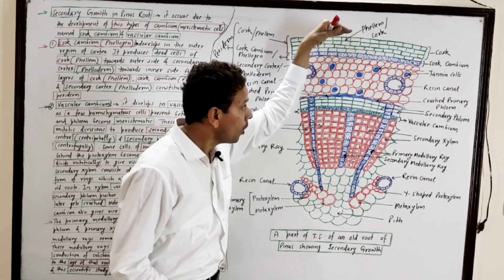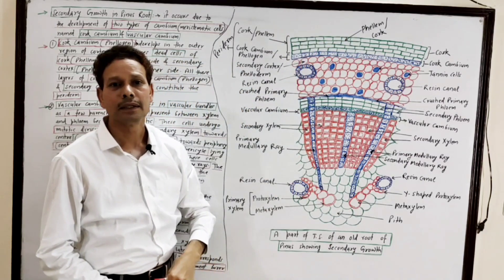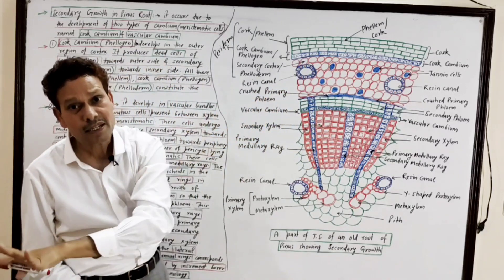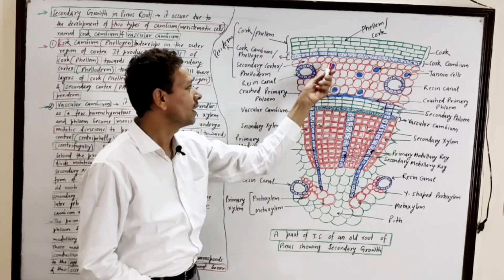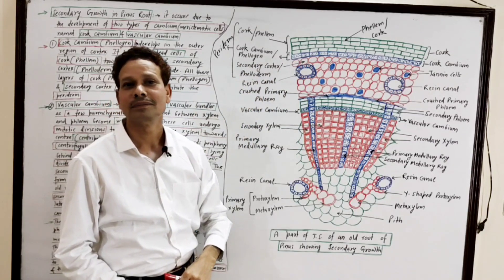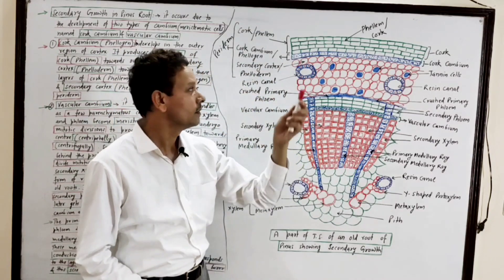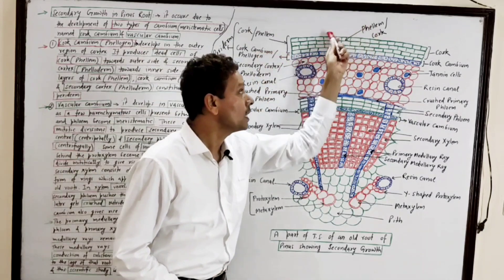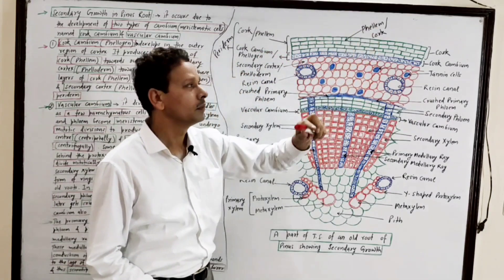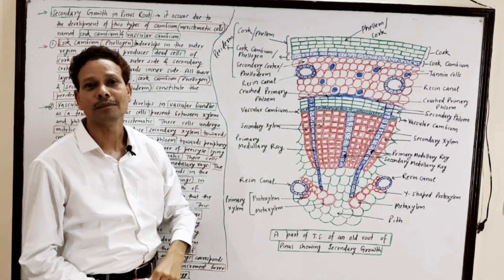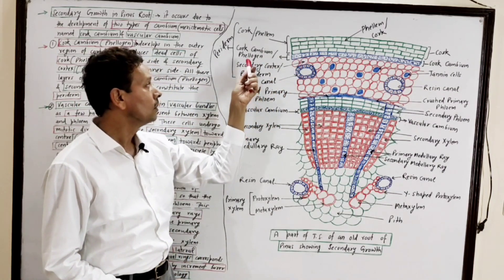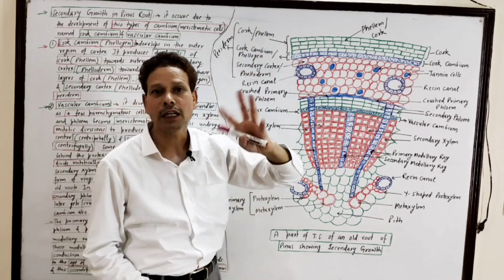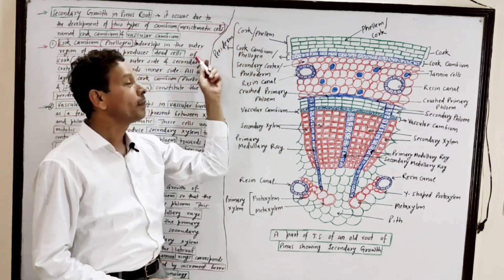The cork cambium also gives rise to cells towards the center, towards the inner side — these are secondary cortex, or phelloderm. Note: the cork cambium is phellogen, the dead cells are cork or phellem, and the secondary cortex is phelloderm. Together, phelloderm, cork cambium (phellogen), and cork (phellem) collectively constitute the periderm.